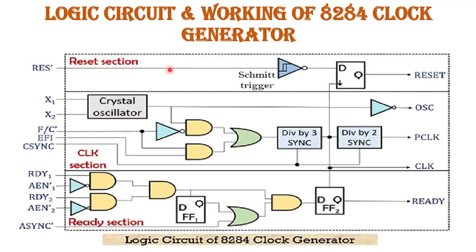The first is the reset section. The reset section produces a reset synchronization signal at its output. It is basically composed of two components: a Schmitt trigger and a D-type flip-flop. The function of the D-type flip-flop is to ensure the timing requirement of the 8086 reset. This reset signal is applied to the microprocessor on the negative edge of each clock cycle, and the 8086 microprocessor samples this reset signal at each positive edge of the clock cycle.